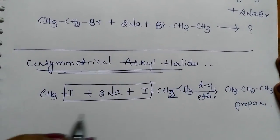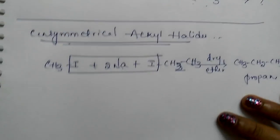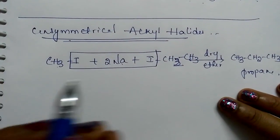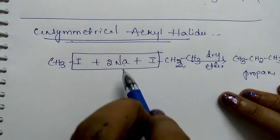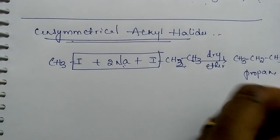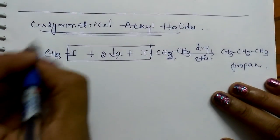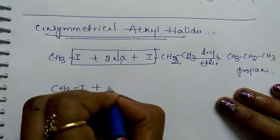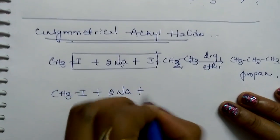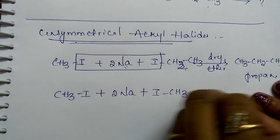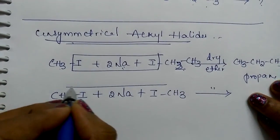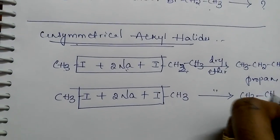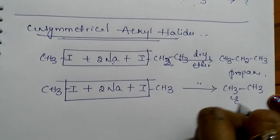Along with propane, another 2 more products are also formed. See here, one methyl iodide reacts with ethyl iodide to form propane, and suppose both methyl iodides react with each other in the same reaction, then we get ethane.